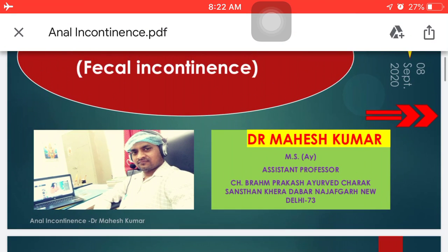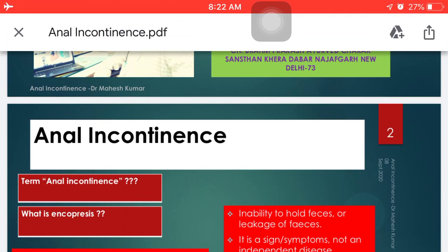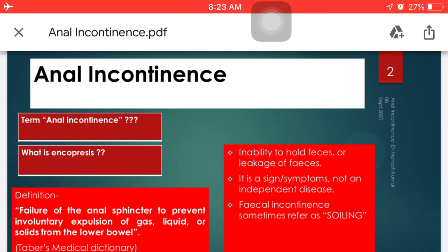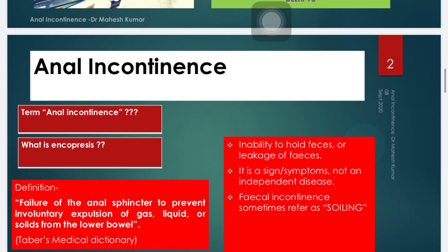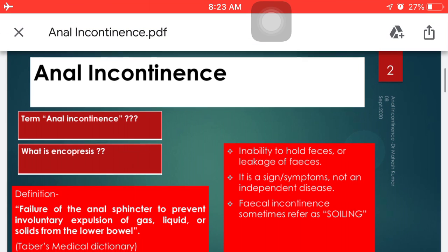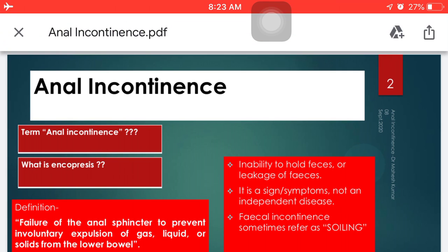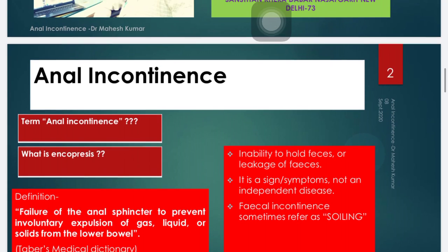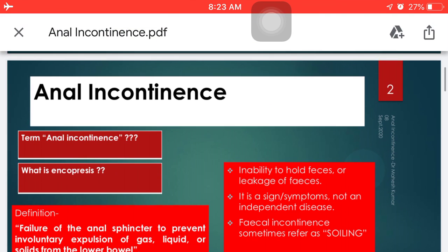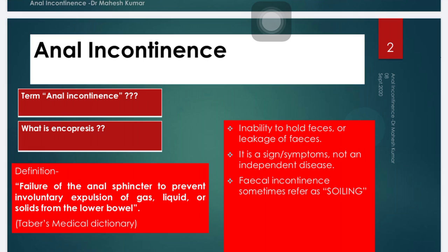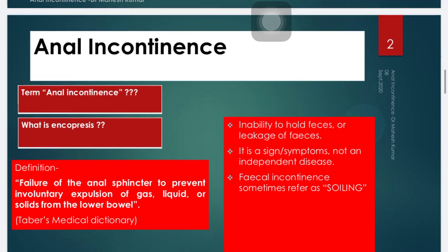A similar term, encopresis, is also well known. It refers to a condition in which a child resists having bowel movements, causing impacted stool to collect in the colon and rectum and lead to leakage. This can be managed simply with toilet training, plenty of fruits, vegetables, and a fibrous diet. Generally, encopresis has no organic cause.